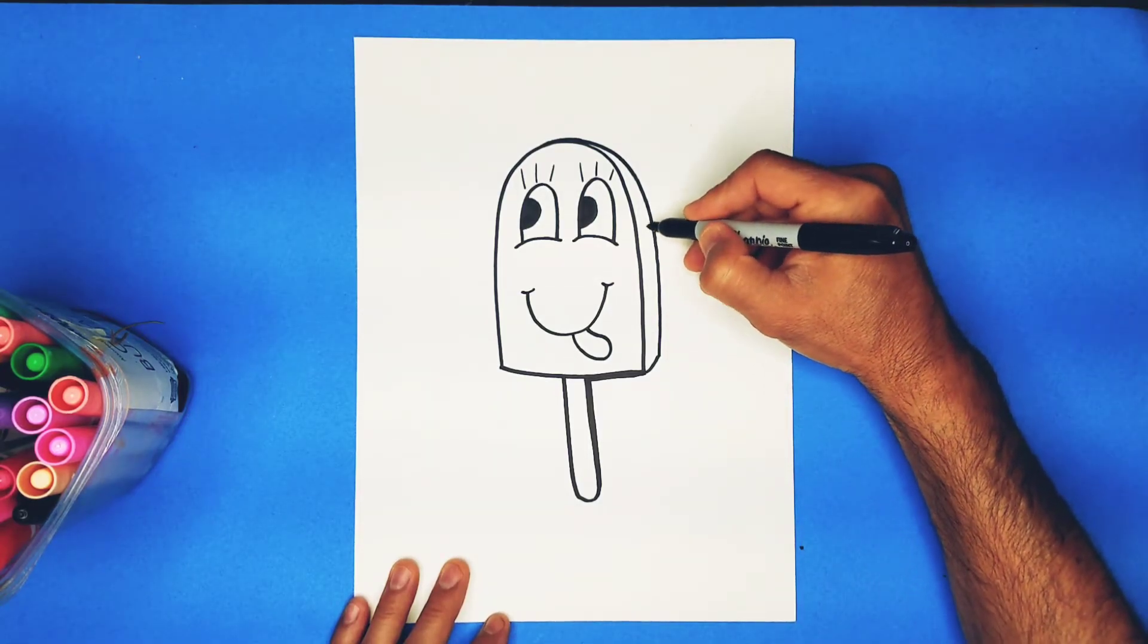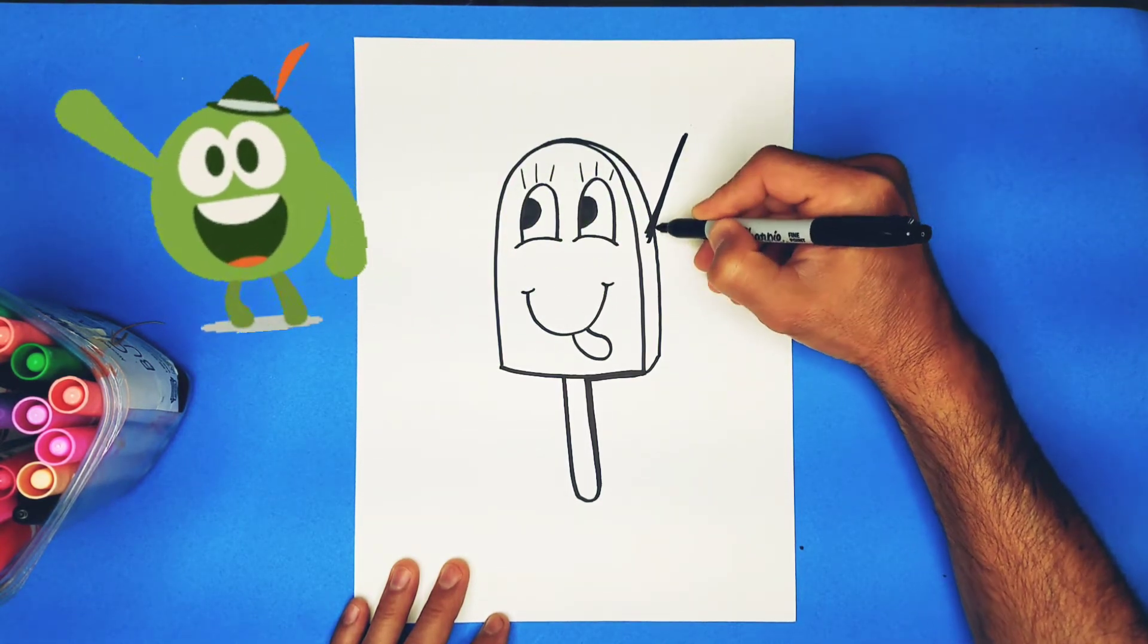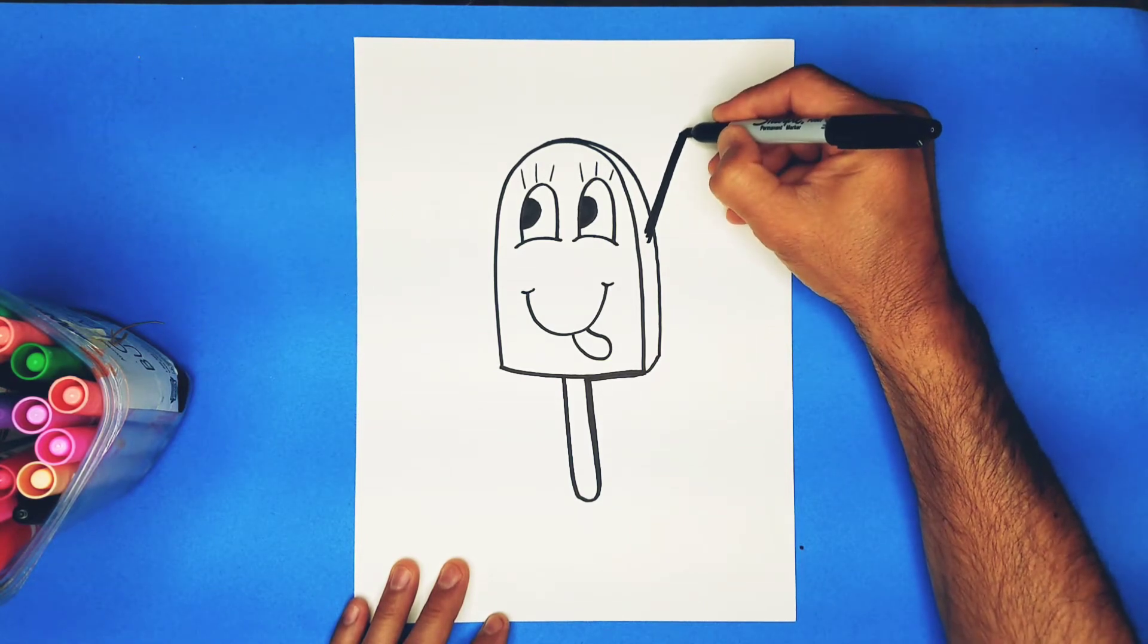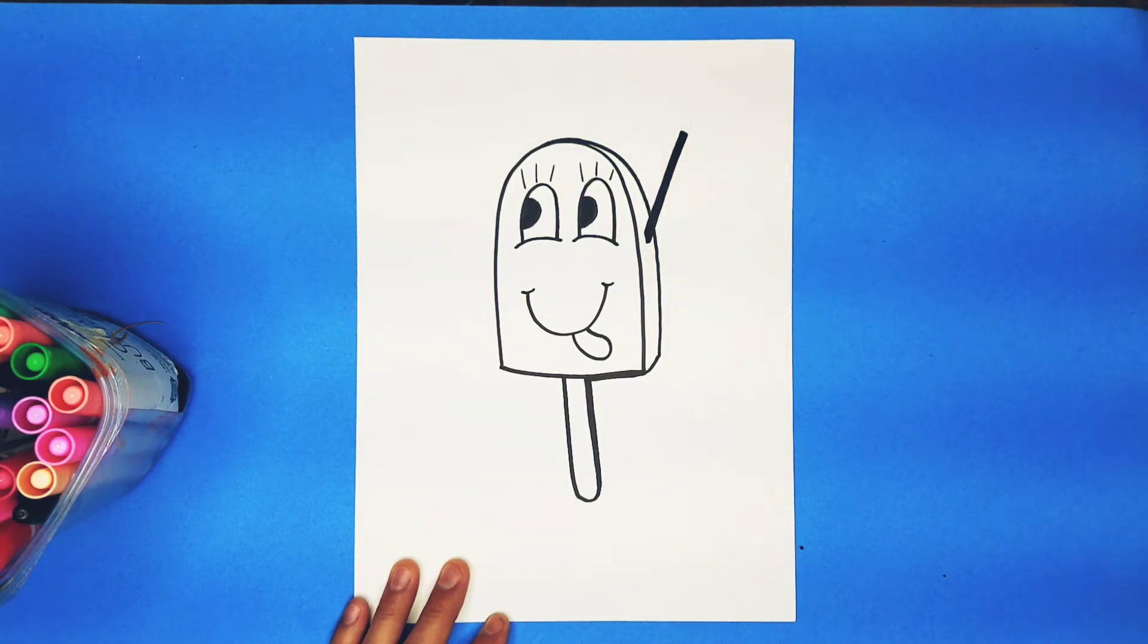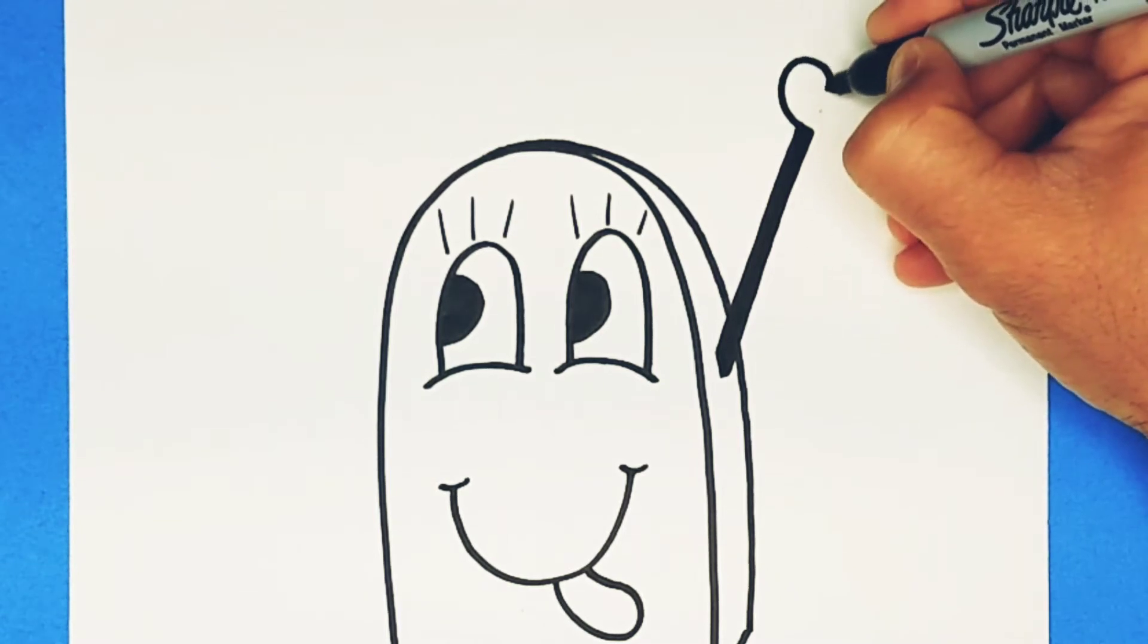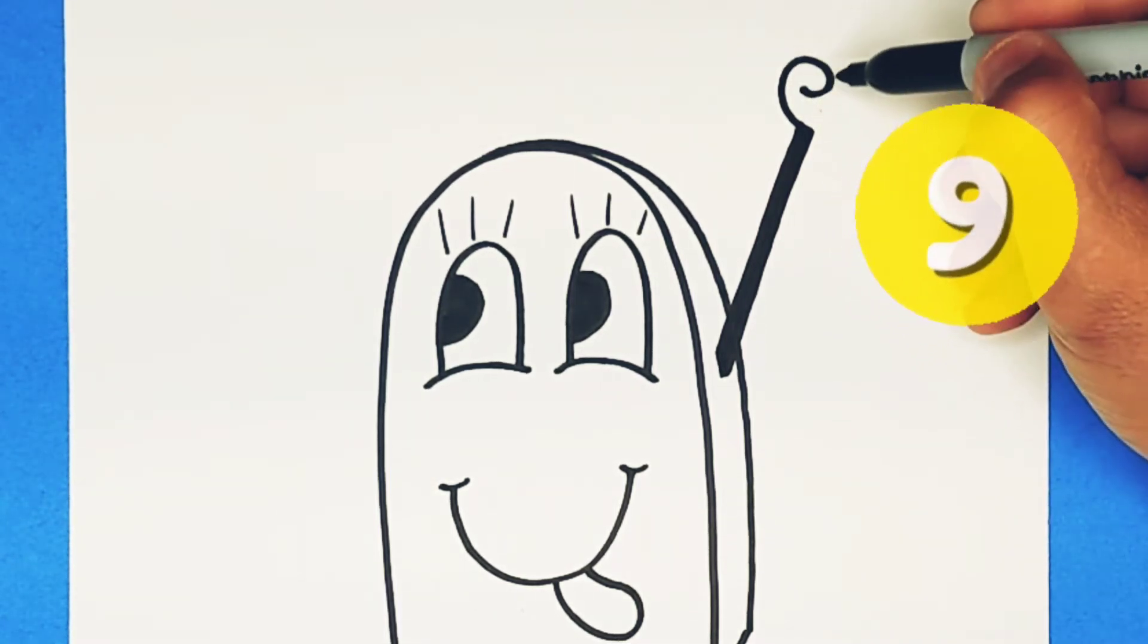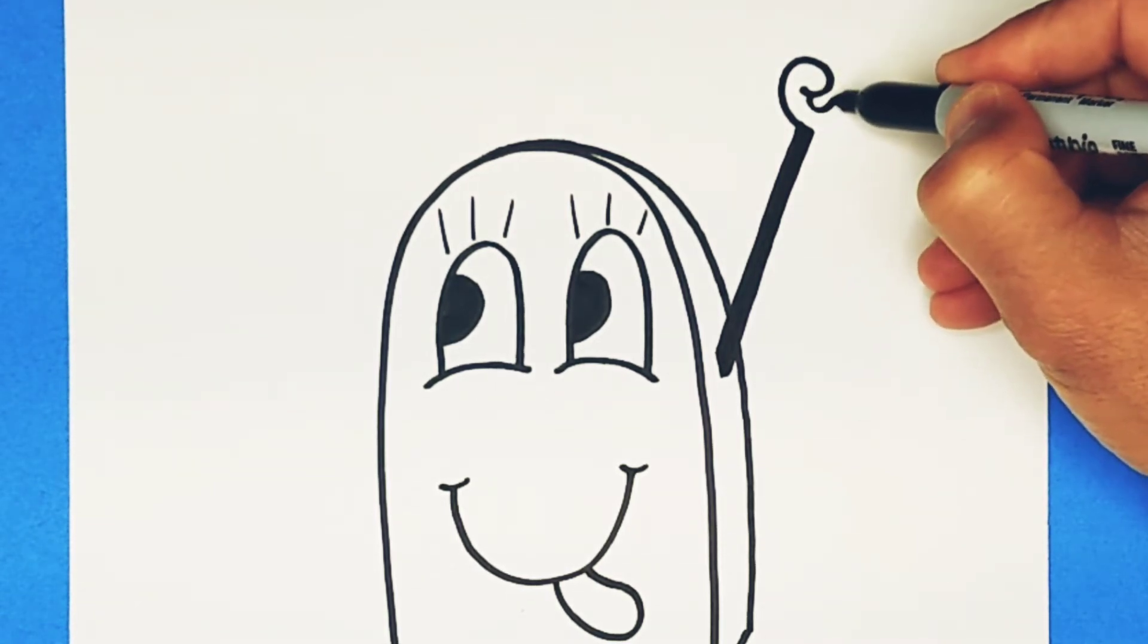Okay, we're going to put an arm sticking up sort of like it's waving. You can thicken that line. Square it off at the end a little bit right there. And we're going to put what looks like a number nine or backwards, sort of like an E.